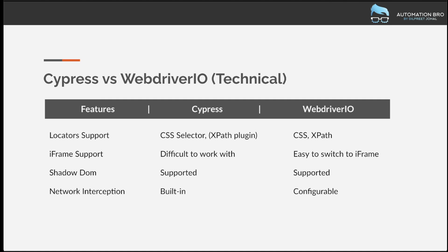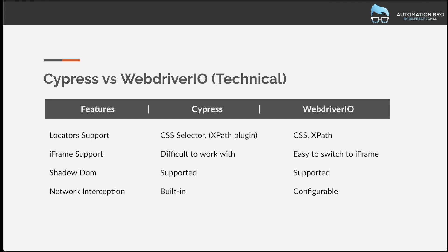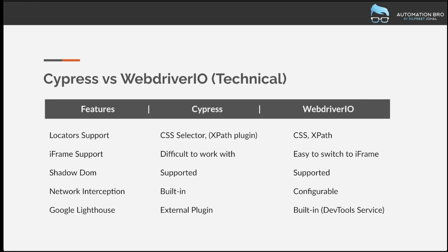For network interception — mocking or stubbing network calls to return specific responses — both Cypress and WebDriver.io support this. Cypress has it built in, while WebDriver.io uses an external service to configure it. For Google Lighthouse performance reports, both also support this: WebDriver.io has it as a built-in feature via the DevTools service, while Cypress uses an external plugin.